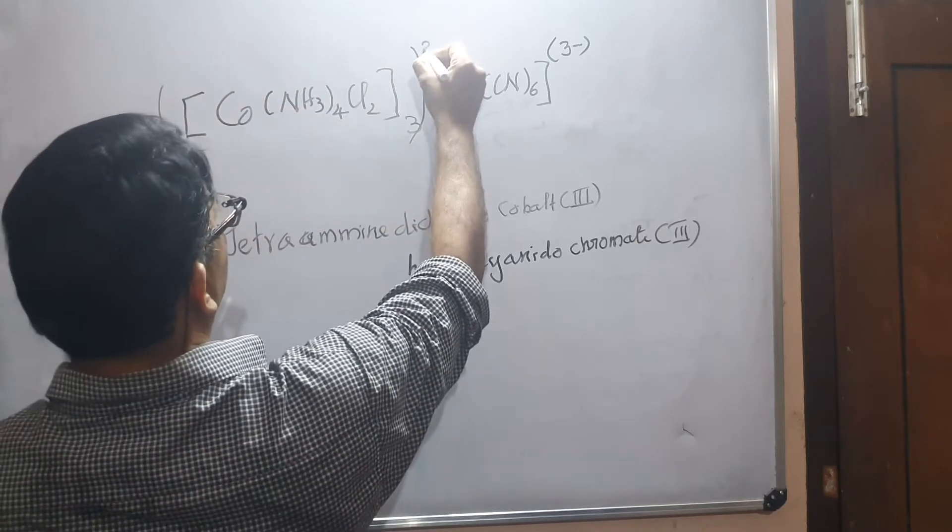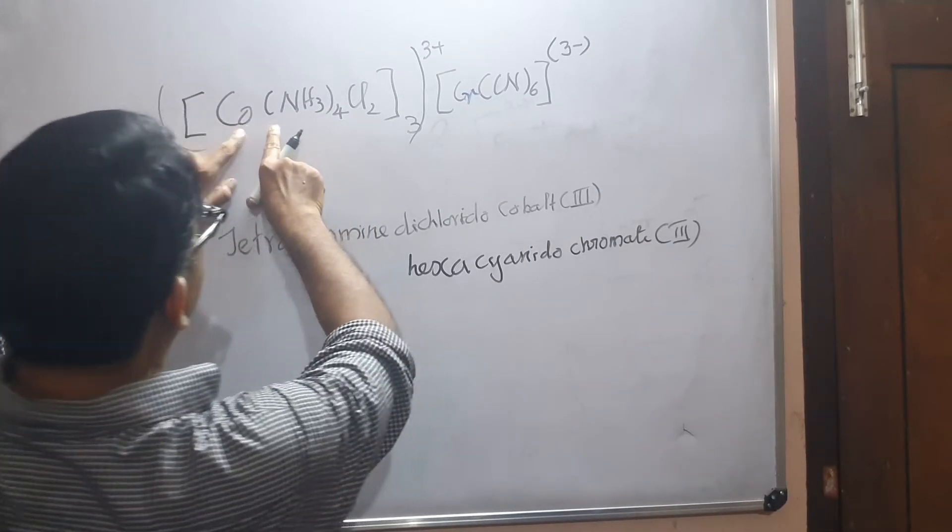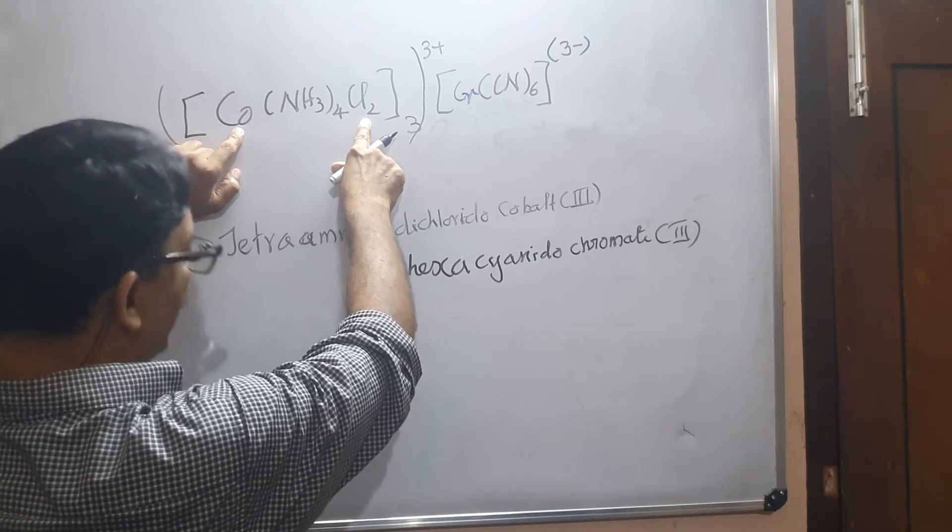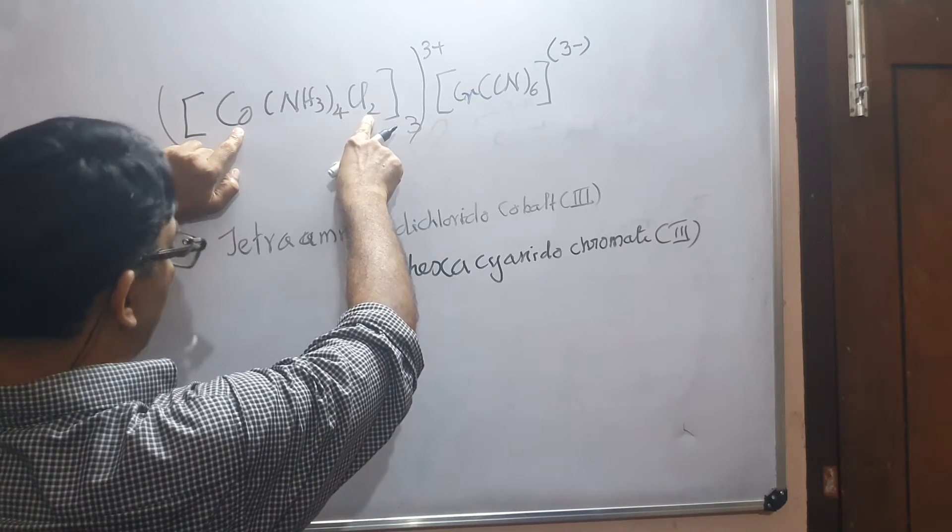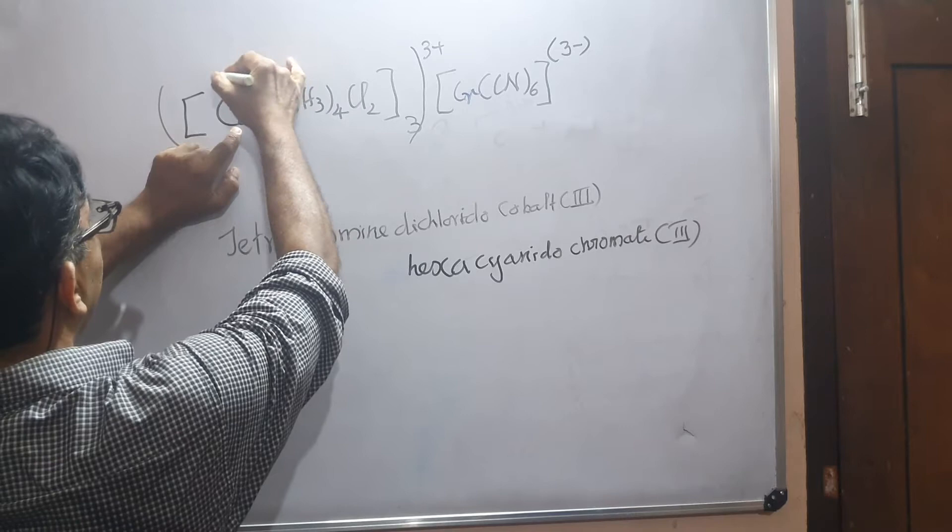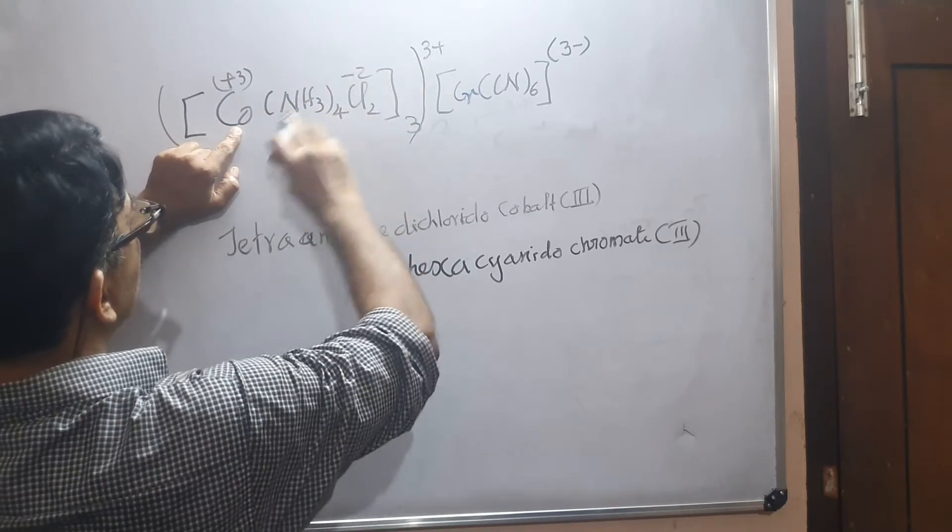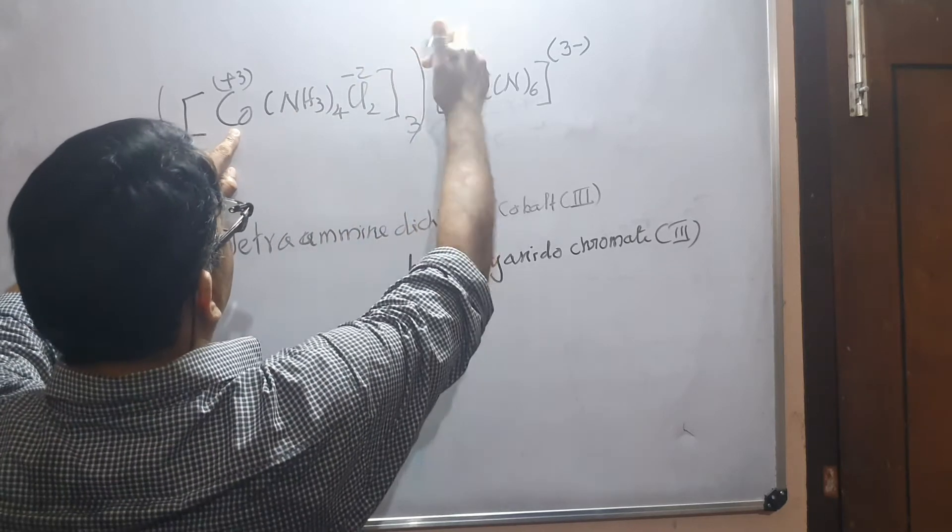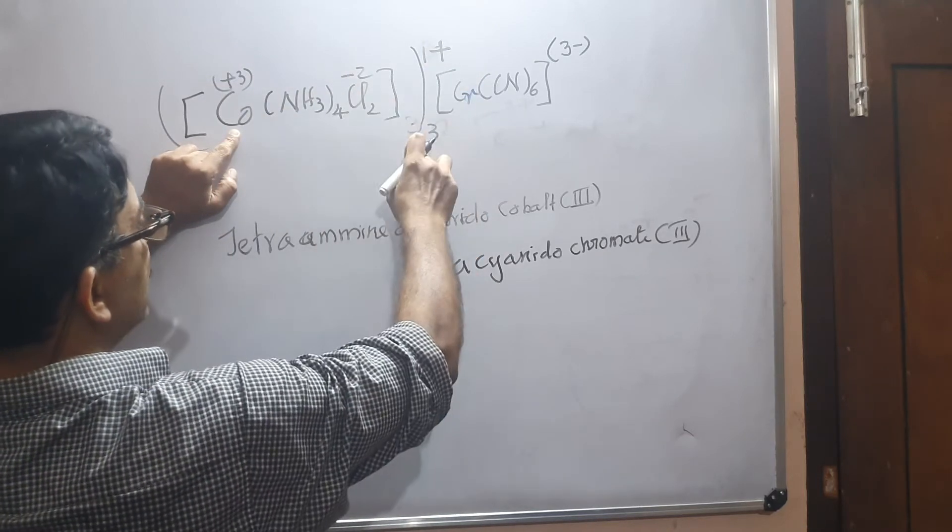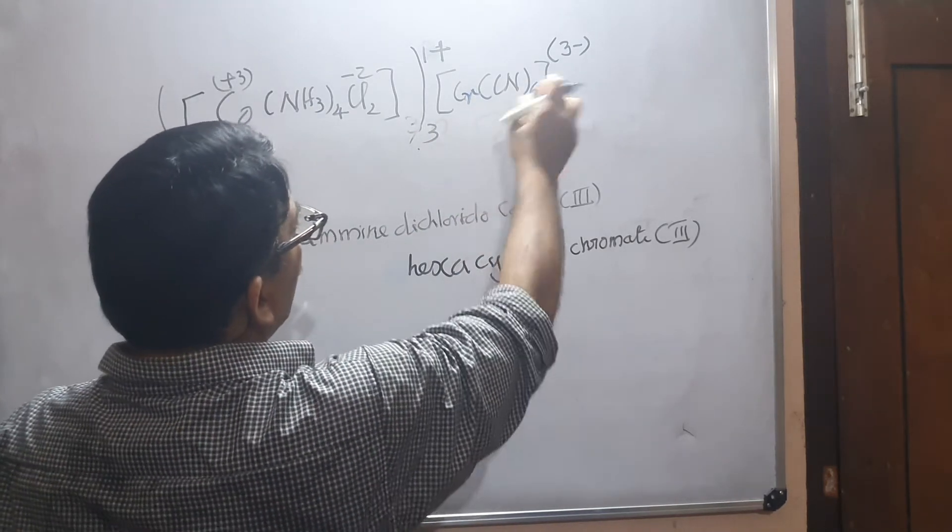Now we have to think about the charge of cobalt here. There are two chlorides, each with minus one charge. So each chlorine is having minus one, making minus two. This cobalt must be plus three. Plus three cancelled by two minus here, so that each cation becomes plus one. Three such cations make the total charge plus three.